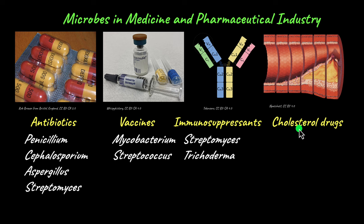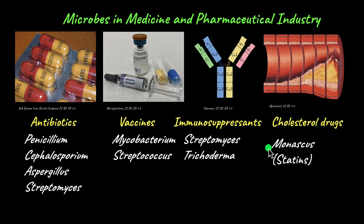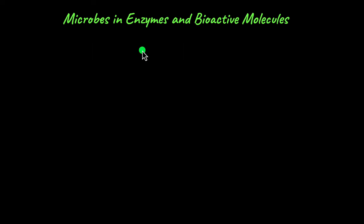Cholesterol drugs are another type produced using microbes. If cholesterol levels increase in our body, it can cause blockage of arteries and blood vessels, affecting blood flow. Statins are the drugs used to lower cholesterol in our body, and Monascus is the main species from which these statins are extracted.